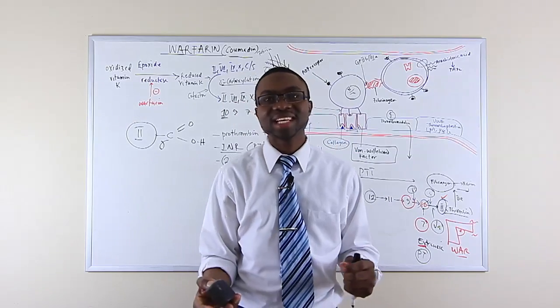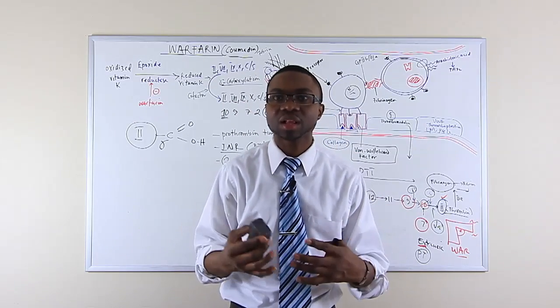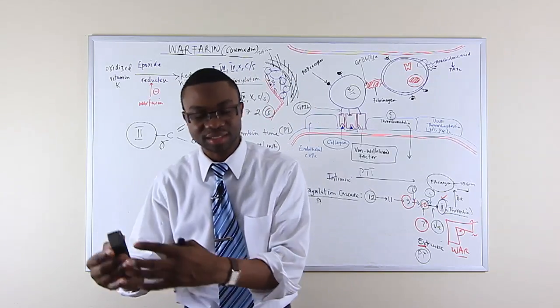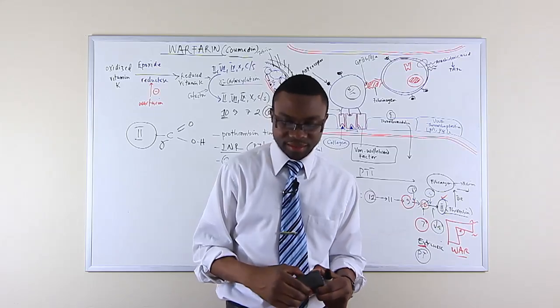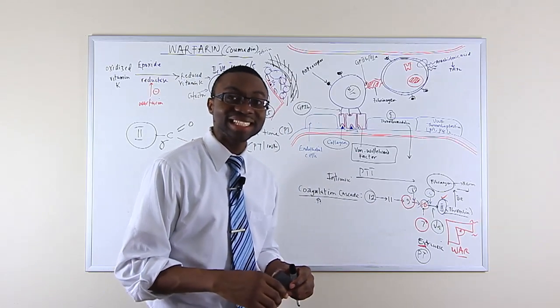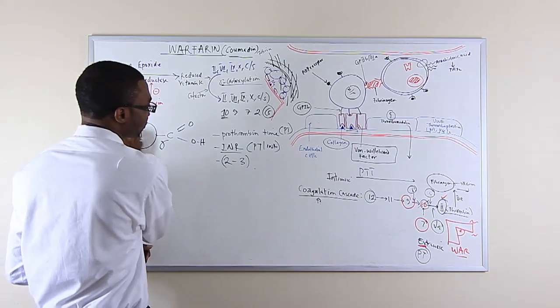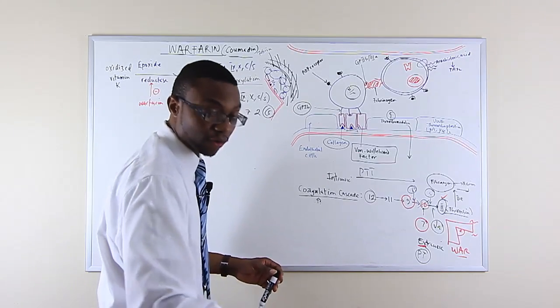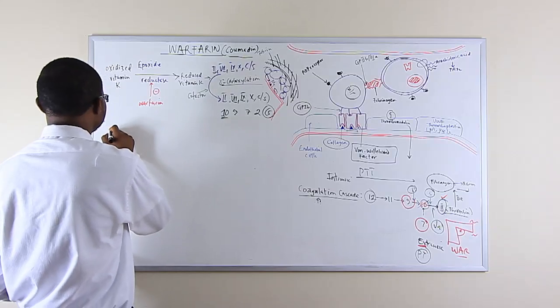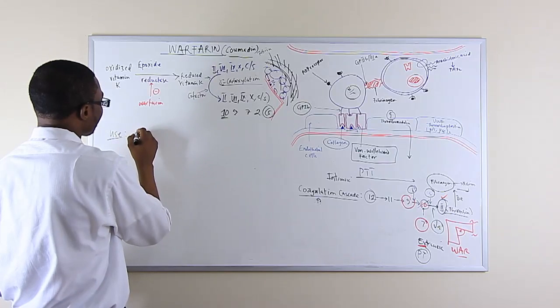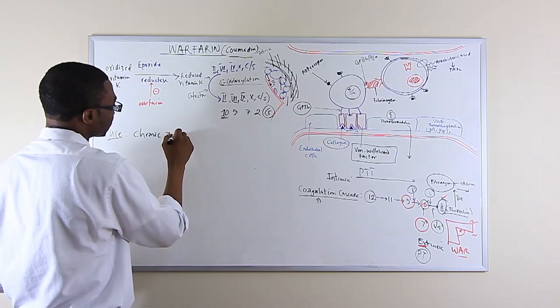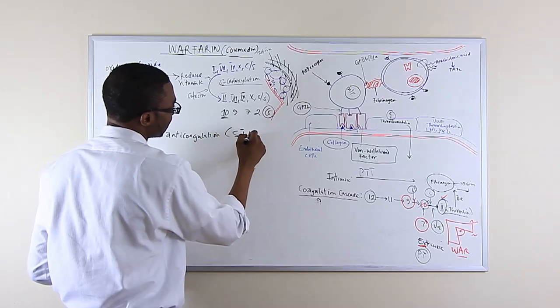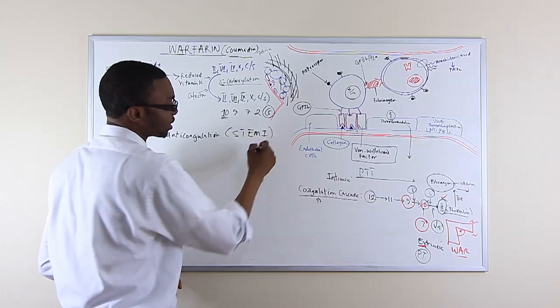So what do we use warfarin for? What is the clinical use of warfarin? Well it makes sense. We're trying to thin out the blood so they don't clot. So we're going to use it for symptoms that cause clotting in the body. Well the first one is we use it after an ST elevation myocardiac infarction, which is known as STEMI. So we use it for chronic anticoagulation in a patient that has ST elevation myocardiac infarction.